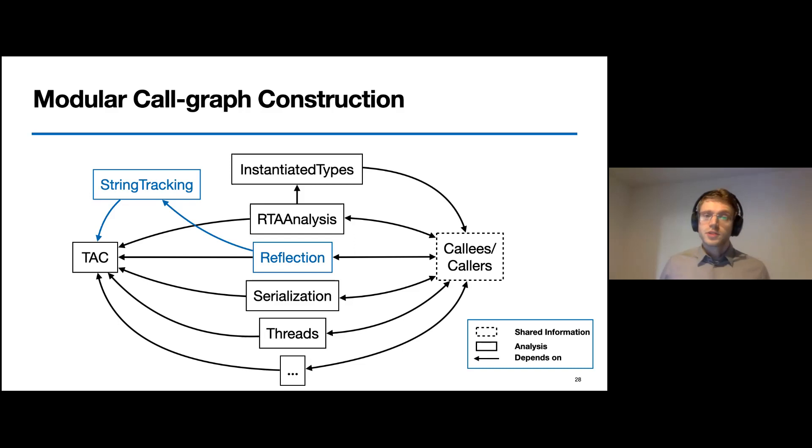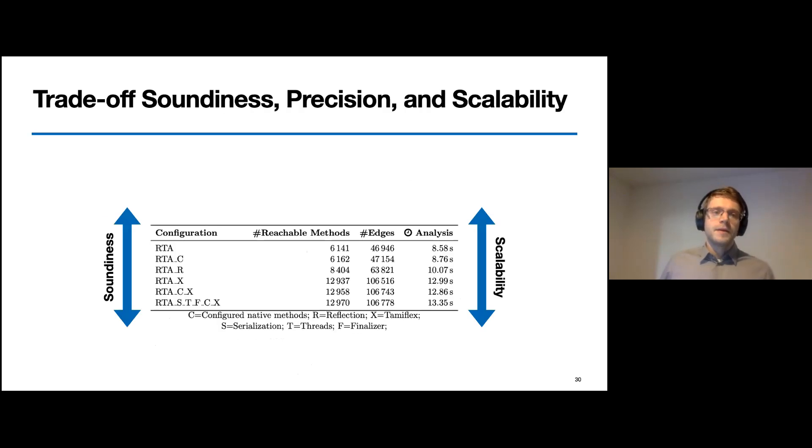But the system also allows us to add additional analyses, for example, to track strings more precisely to be able to deal better with reflective calls. Or we can also exchange single analysis implementations such that we can use the reflective call edges captured by, for example, TamiFlex, which is a dynamic analysis.